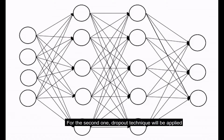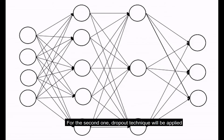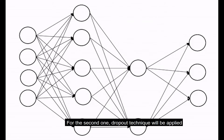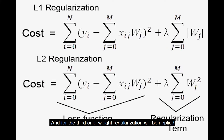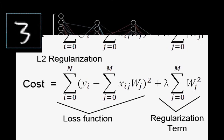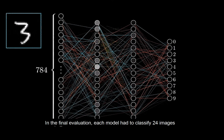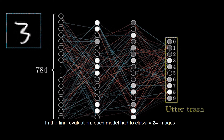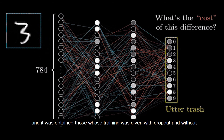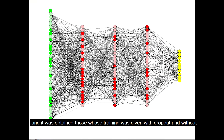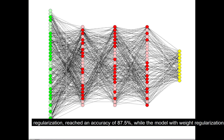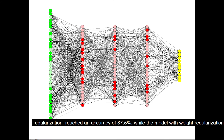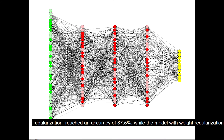Three models were compared: for the first, no regularization technique was applied; for the second, the dropout technique was applied; and for the third, weight regularization was applied. In the final evaluation, each model had to classify 24 images.